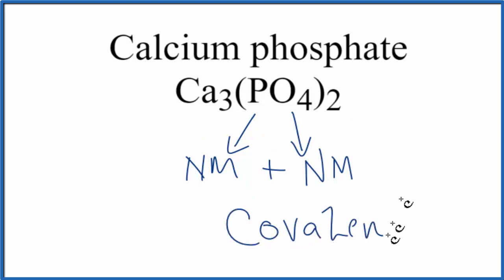So the bond between the phosphorus and the oxygens in the phosphate ion, that's covalent. But the bond between the calcium ions here and the phosphate ions, that is ionic.